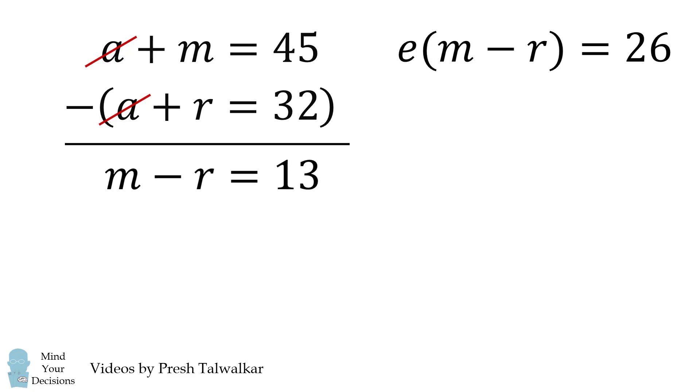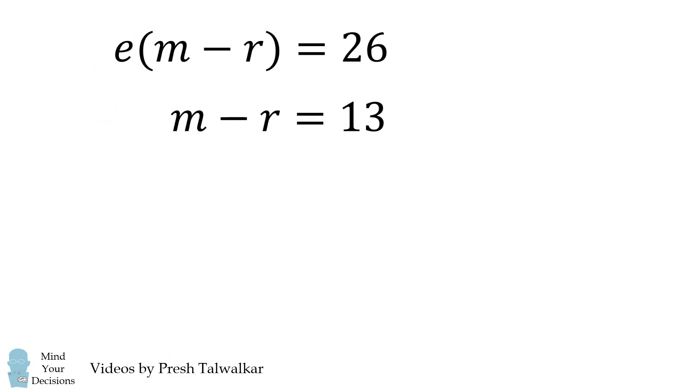And this is good because we can substitute this into the equation e multiplied by m minus r is equal to 26. We then get e multiplied by 13 is equal to 26, which means e is equal to 2.